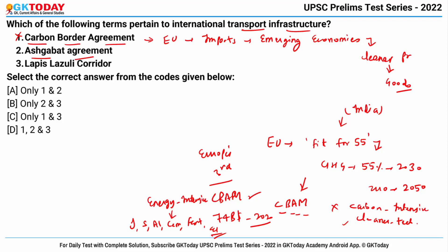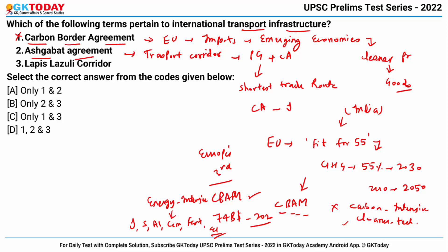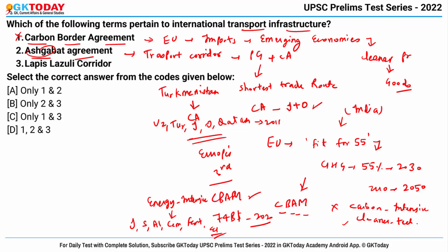The second term is the Ashgabat Agreement. This is an agreement to develop an international transport corridor to facilitate movement of goods between the Persian Gulf and Central Asia. Its basic aim is to develop the shortest trade route between Central Asian countries and Iranian and Omani ports. Ashgabat is the capital and largest city of Turkmenistan. The agreement was initially signed among Uzbekistan, Turkmenistan, Iran, Oman and Qatar in 2011, and India will be able to utilize this corridor for trade with the Eurasian region.